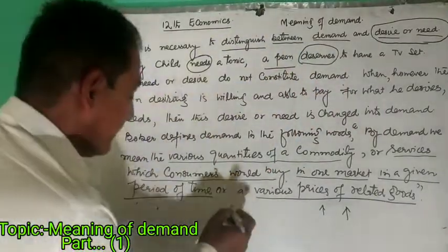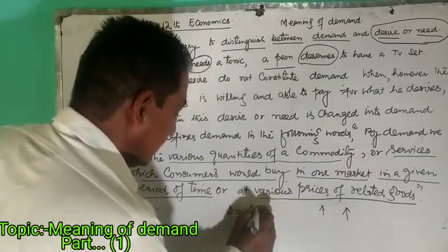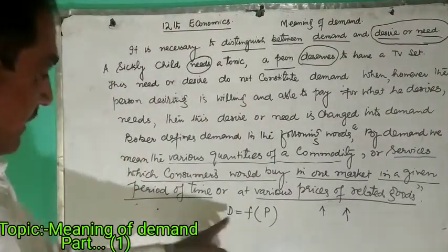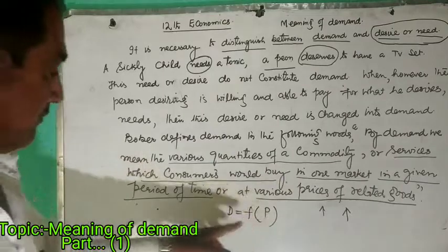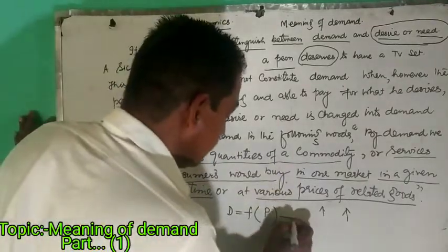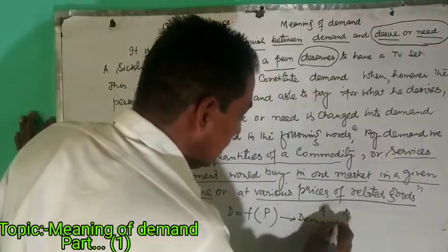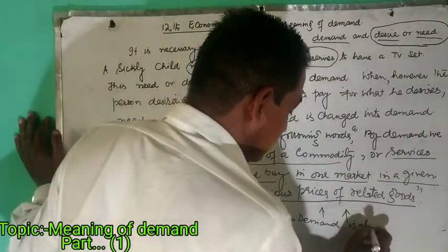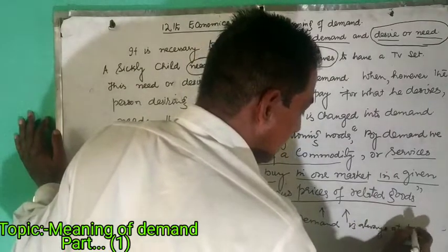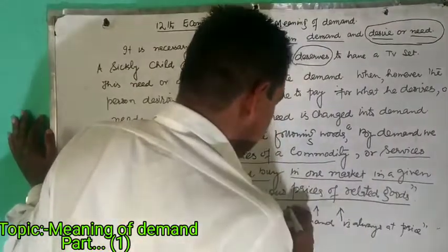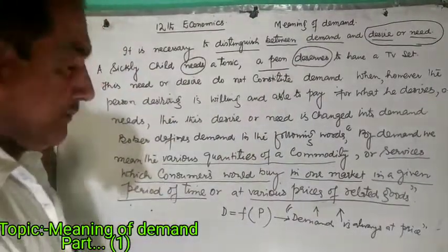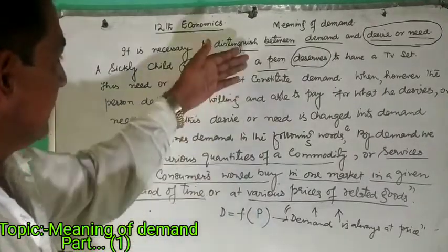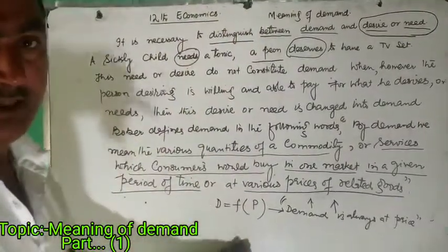Mathematically and equationally, D is a function of P — this is the demand equation. When we write that demand is always at a price, the whole thing is understood. Demand is always at a price. So this is very essential: demand is always at a price. This is the mathematical equation, this is the definition, and this is the meaning part.